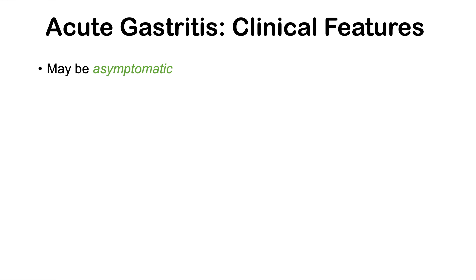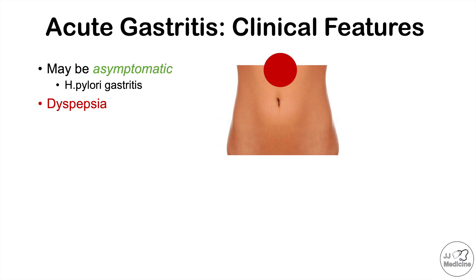Now let's talk about the clinical features — the signs and symptoms of acute gastritis. It's important to note that some patients may be asymptomatic; for example, some cases of non-erosive gastritis and H. pylori gastritis in the acute setting may have no symptoms at all. When symptoms do occur, we often see dyspepsia — a gnawing, burning sensation in the epigastric area (the area in the middle of the abdomen above the belly button) — as well as epigastric pain.